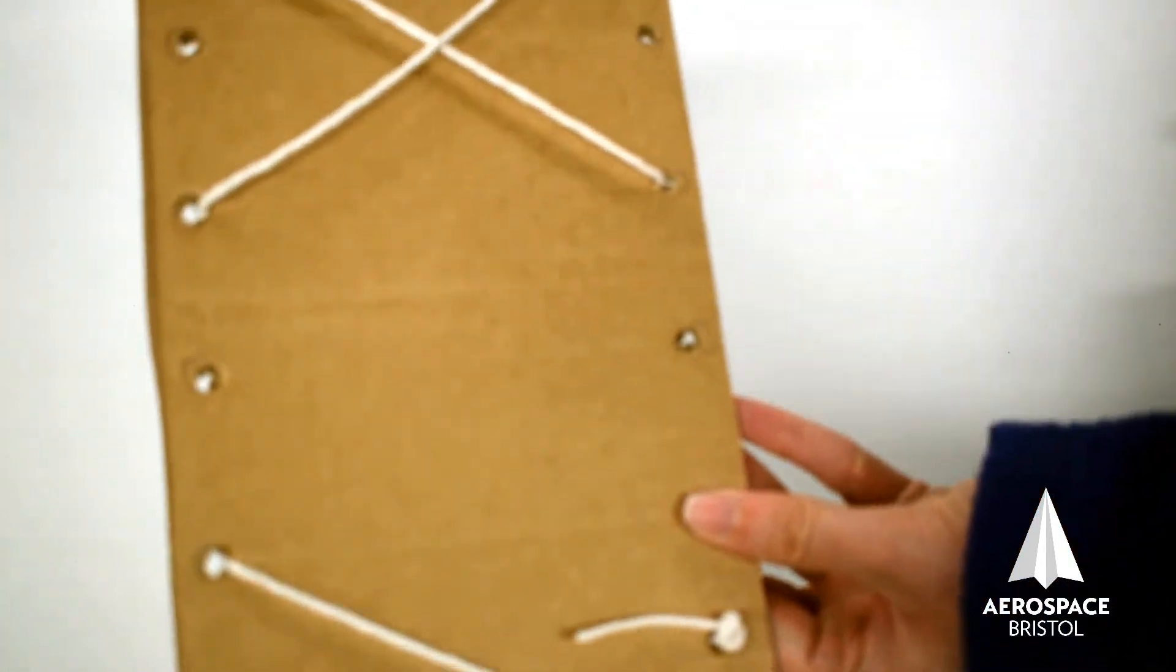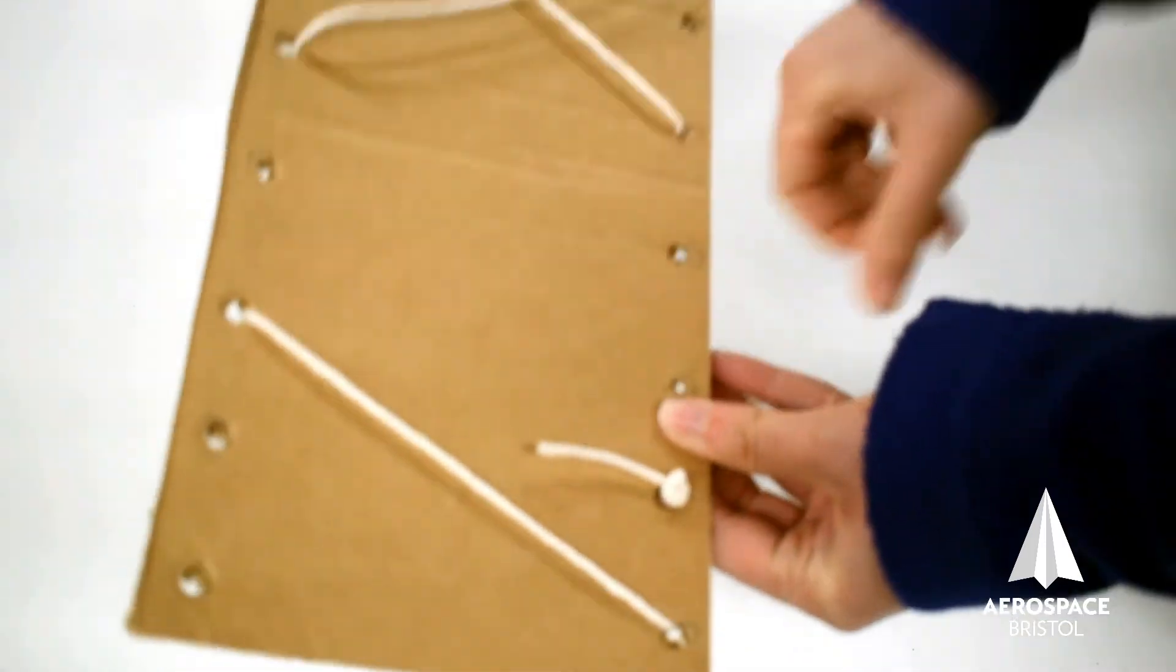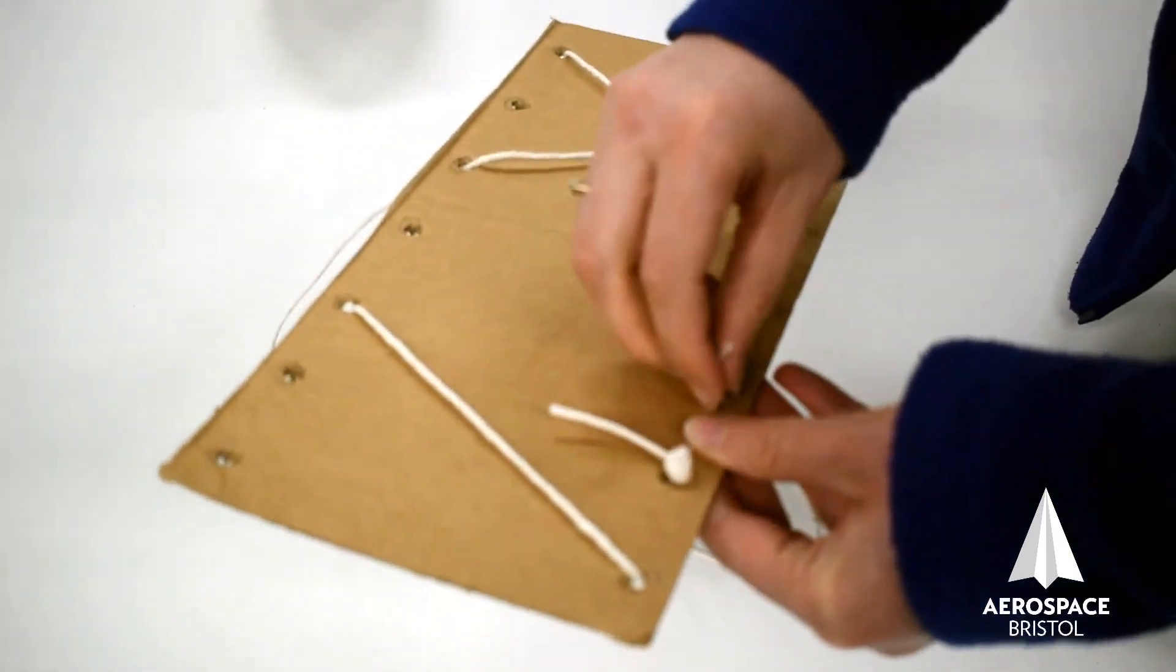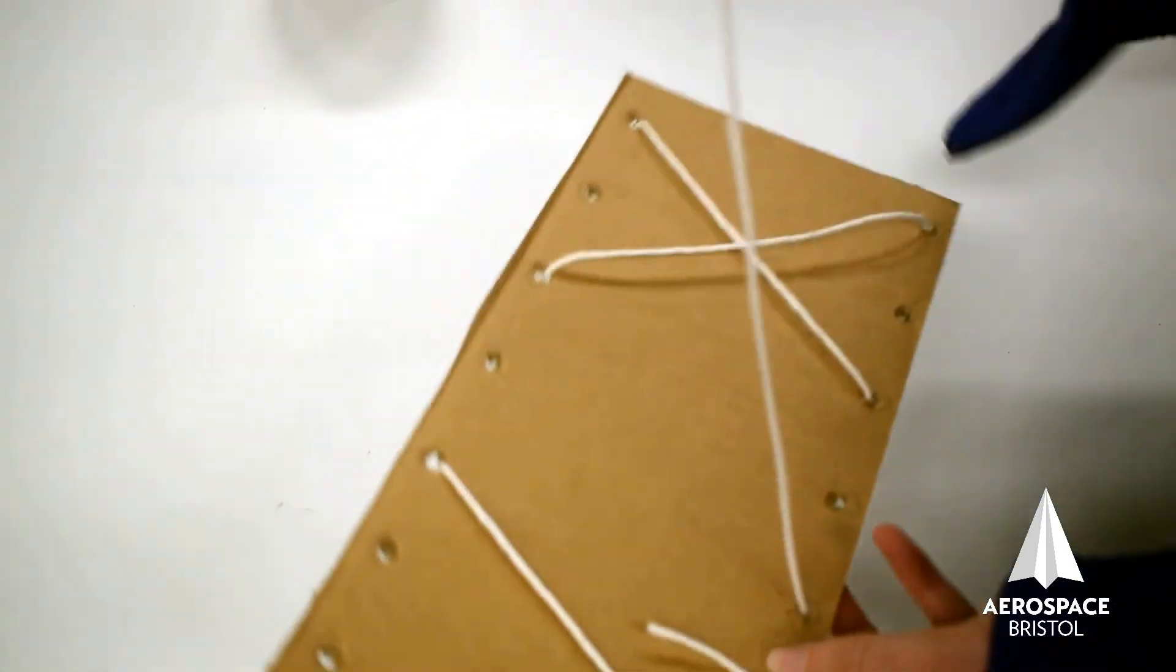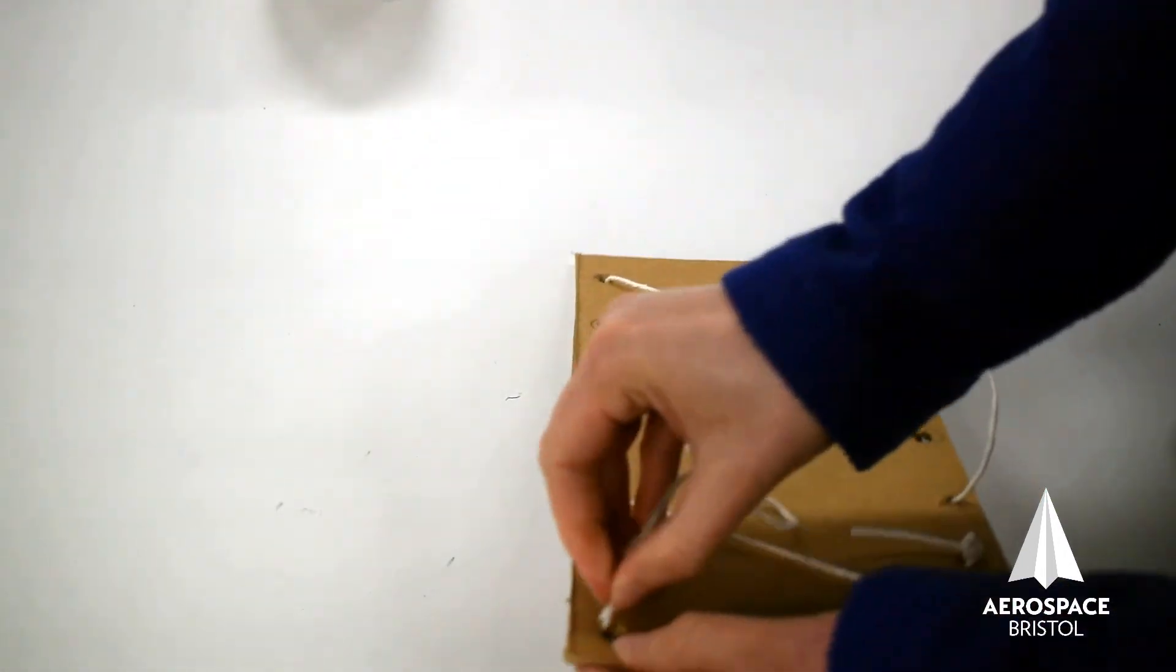It's much easier to do this with a lace than a piece of string because laces have the plastic bits around the end. You don't have the same problem with the string fraying that I'm having. What you could do is put a piece of sellotape around the end of the string to stop it from fraying, and then it would be like a shoelace.